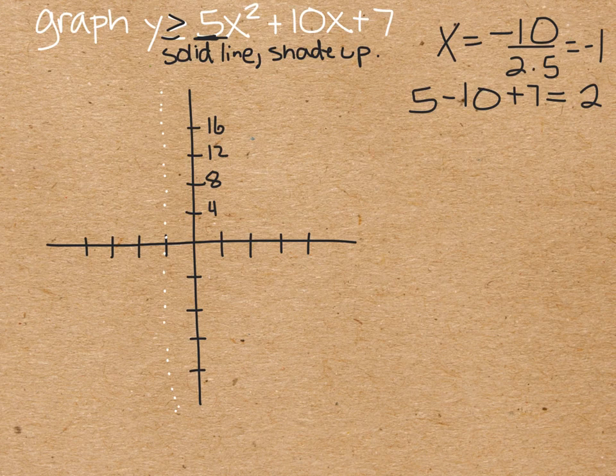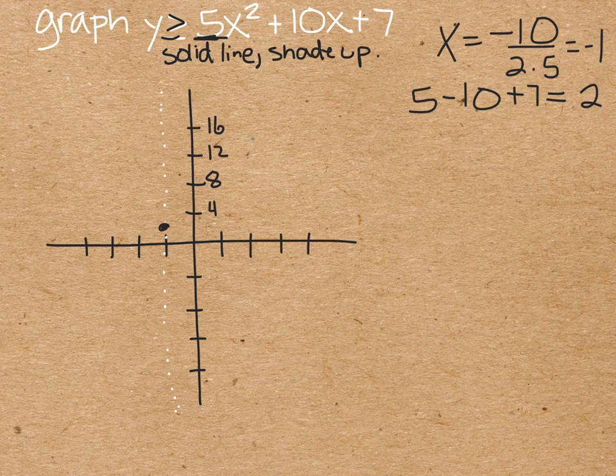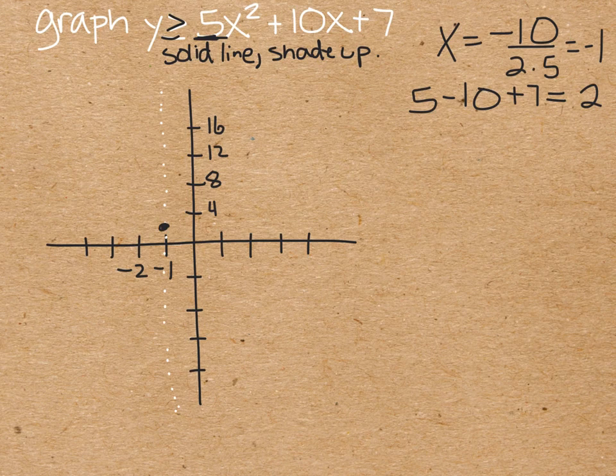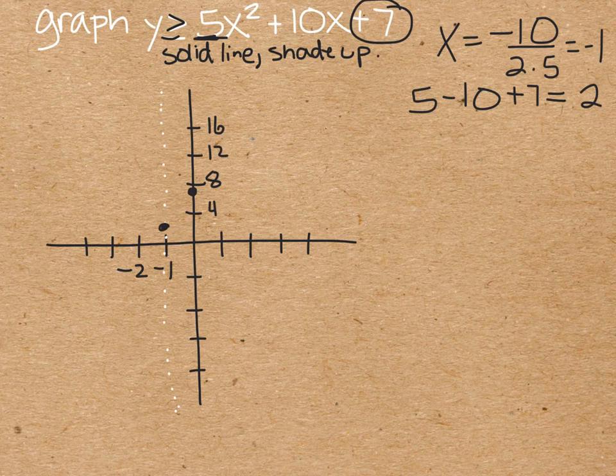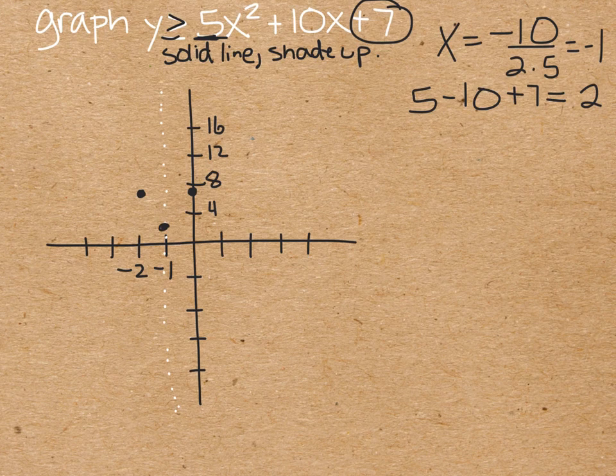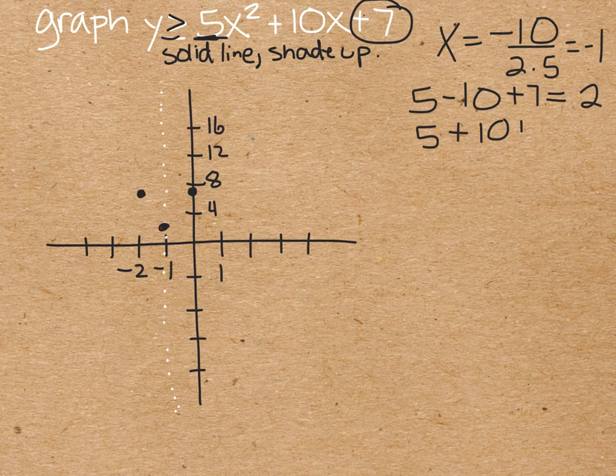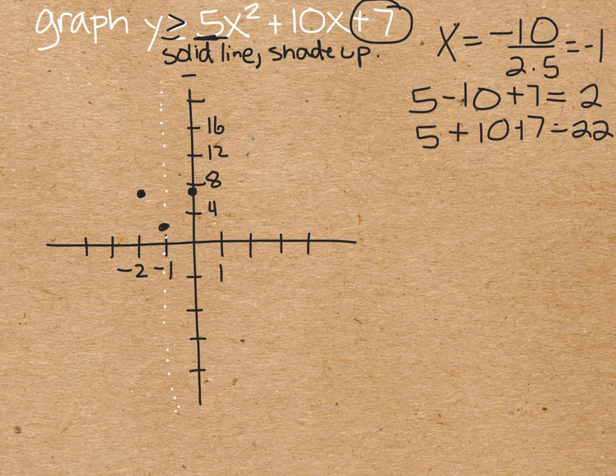Remember, a vertical stretch makes it narrower. So we will plot at negative 1, 2, and then we can figure out that the y-intercept is 7. So right there, and mirror it across. And since we need one more point, if we plugged in a positive 1, we would get 5 plus 10 plus 7, which is 22, so we'd need to go up to here, and mirror across.